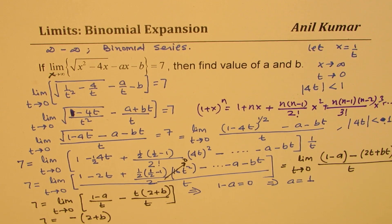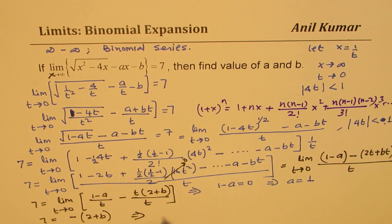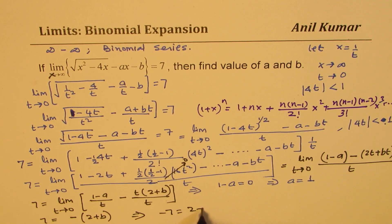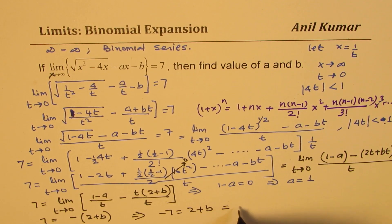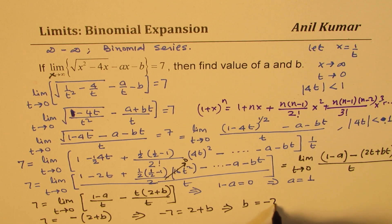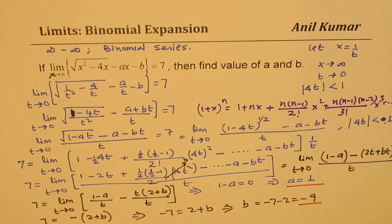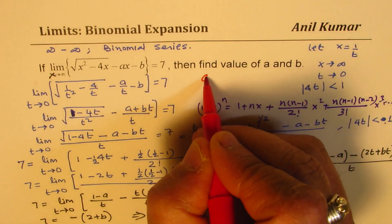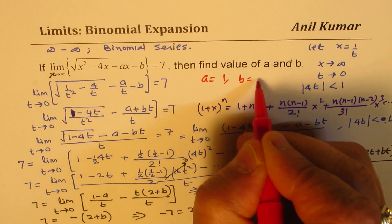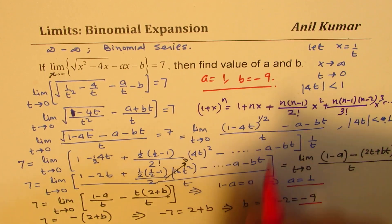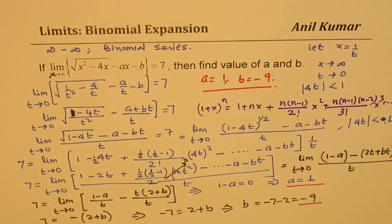We are left with minus 2 plus B. Solving this: minus 7 equals 2 plus B, so B equals minus 7 minus 2, which is minus 9. So B equals minus 9. So the two values are a equals 1 and b equals minus 9.